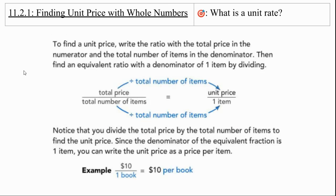Finding unit price with whole numbers. To find unit price, we write the ratio with the total price in the numerator and total number of items in the denominator. Then we find an equivalent ratio with the denominator of one by dividing. So we can divide both of them by the total number of items. Notice when you divide the total price by the total number of items to find the unit price. Since the denominator of the equivalent fraction is one item, you can write the unit price as price per item. So our example, $10 for one book is going to be $10 per book.